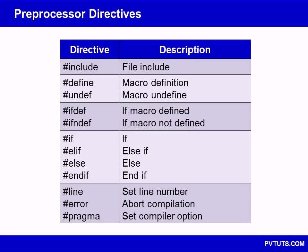The preprocessor is a program invoked by the compiler, which modifies the source code before the actual compilation takes place. This modification is done according to the preprocessor directives that are included in the source files. The directives are easily distinguished from normal programming code, in that they all start with the hash sign. They must always appear as the first non-whitespace character on a line.